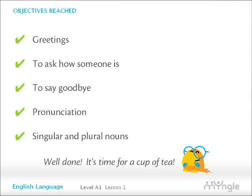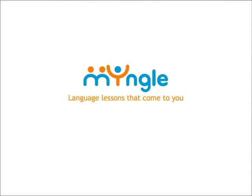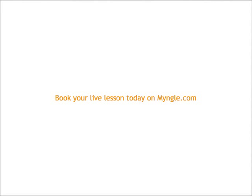Objectives reached. You have now reached the end of the lesson. You have practiced greetings, asking how someone is, saying goodbye, pronunciation, and singular and plural nouns. Well done. It's time for a cup of tea. This brings us to the end of Mingle English Language Level A1, Lesson 1. To book a live lesson today, go to mingle.com.